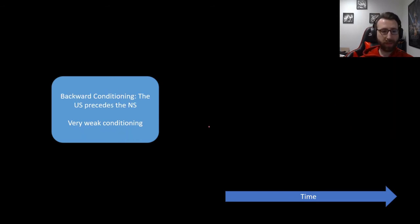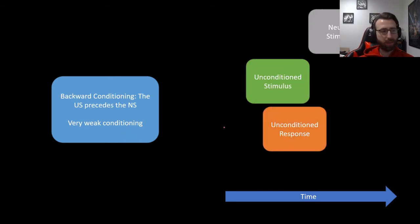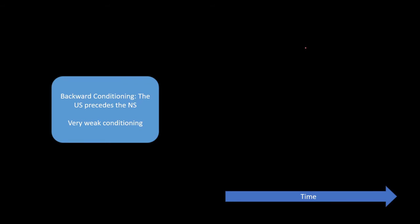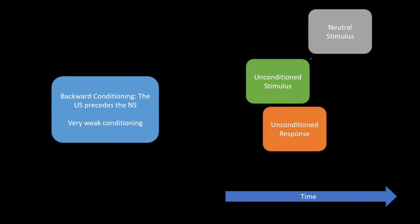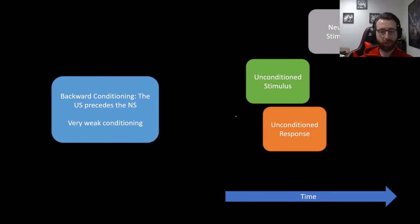Somewhat similarly, we have backward conditioning, in which the unconditioned stimulus arrives before the neutral stimulus. The unconditioned stimulus arrives and elicits its unconditioned response, and then following that, the neutral stimulus arrives. These do become associated, but it results in very weak conditioning, again because it's not a very good predictor.